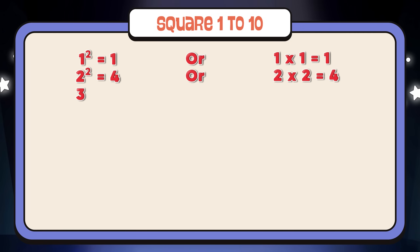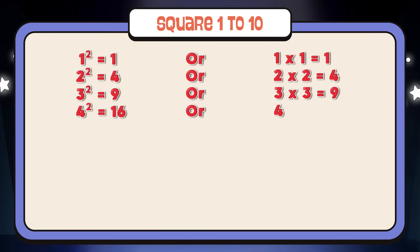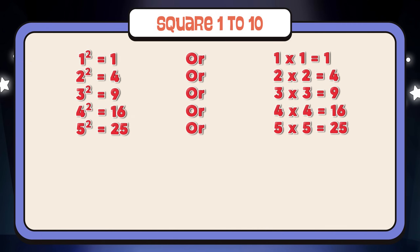3 square is equal to 9, or 3 times 3 is equal to 9. 4 square is equal to 16, or 4 times 4 is equal to 16. 5 square is equal to 25, or 5 times 5 is equal to 25. 6 square is equal to 36, or 6 times 6 is equal to 36.